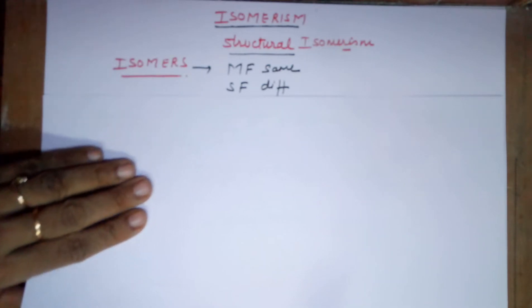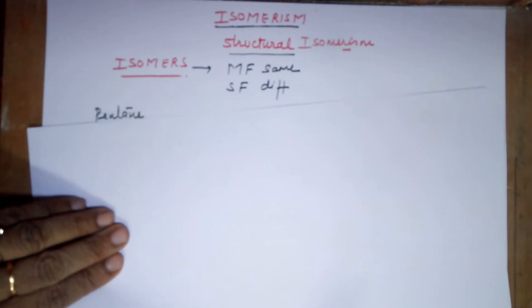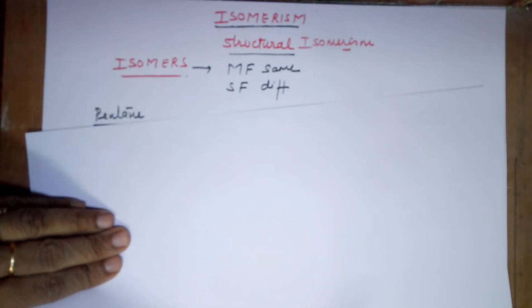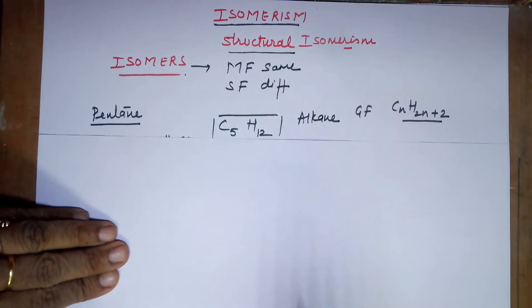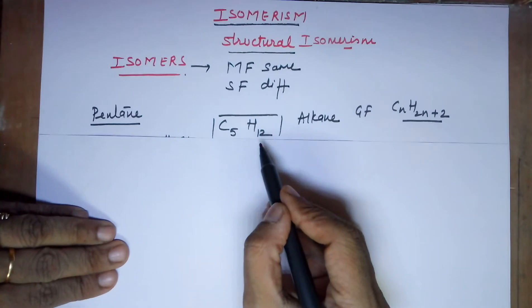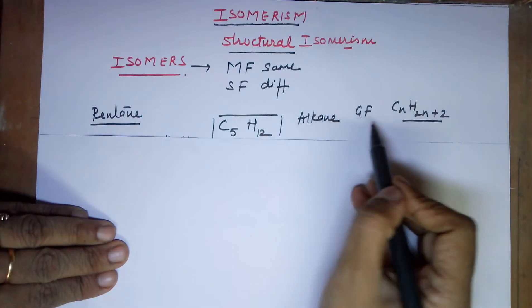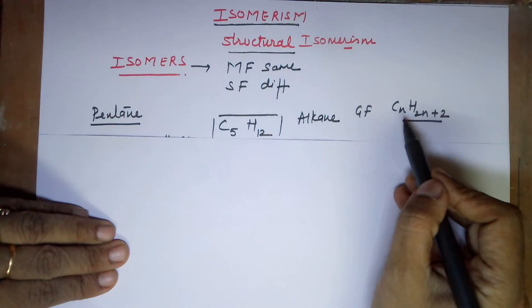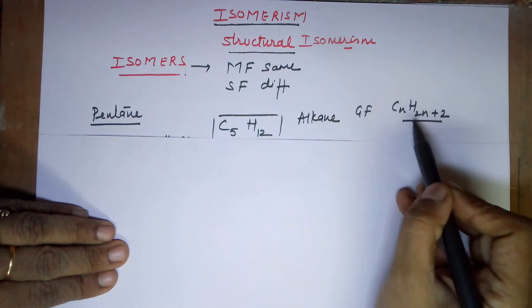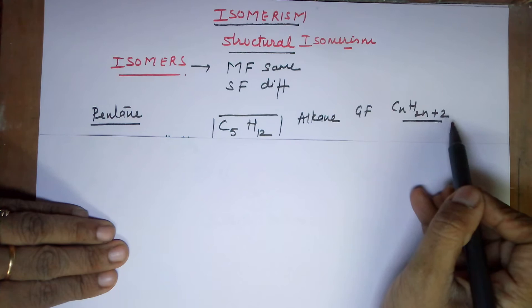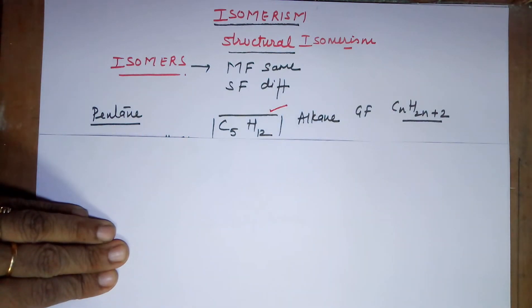The first example I am taking is that of pentane. Pentane, being a hydrocarbon, has got five carbons. How many hydrogens? We can calculate that. Your alkane has five carbons and 12 hydrogens because it is an alkane — it has a general formula of CnH2n+2. So if n is 5, your hydrogens automatically add up to 12. So this is your formula for pentane.